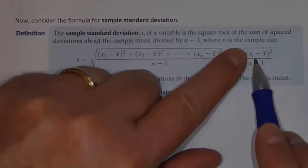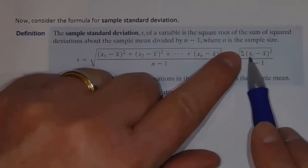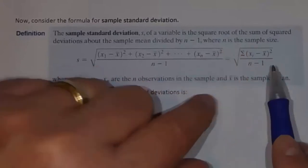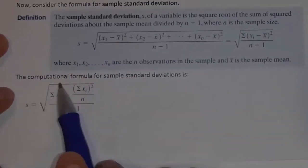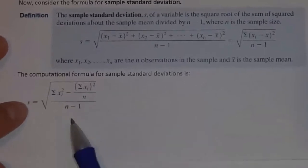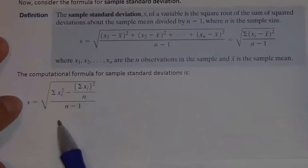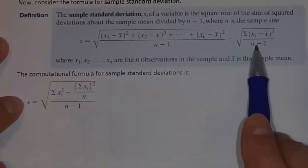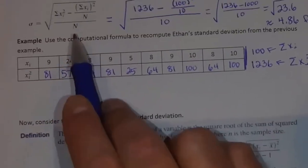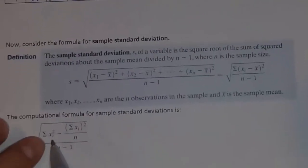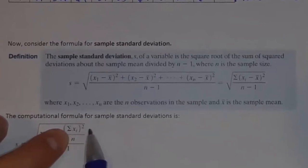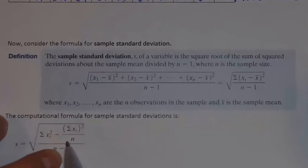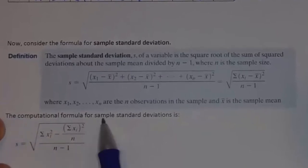We're finding the squared deviations, adding those all up, dividing by n minus 1, and then taking the square root. The computational formula for sample standard deviation works like this: we take each data value, square it, and add it up. Then we take all the data values, add them up, square the result, divide by n, and subtract that. The difference is we divide by n minus 1 and then take the square root.